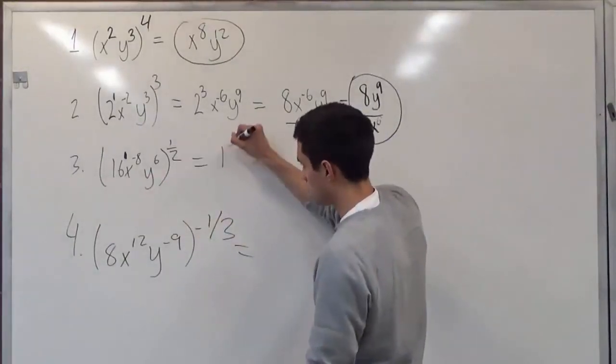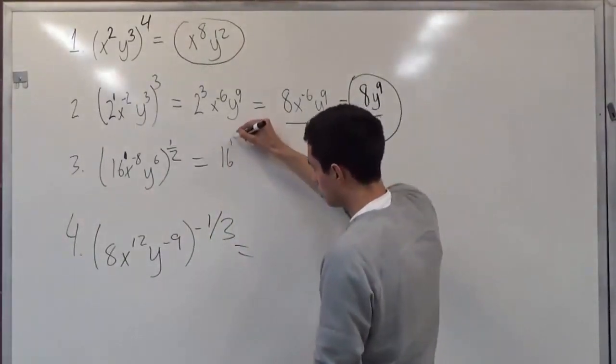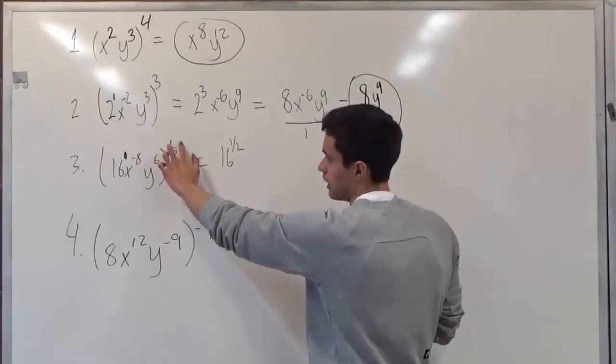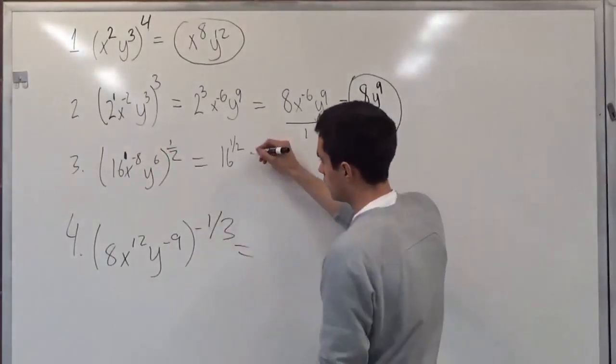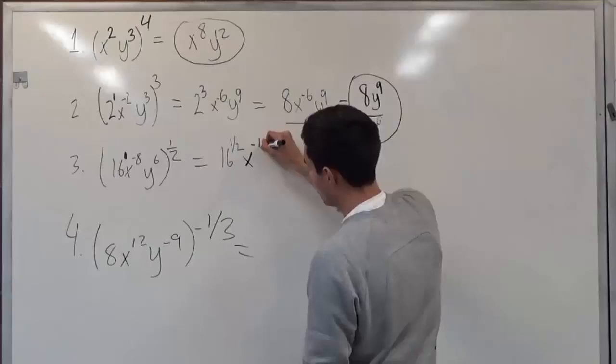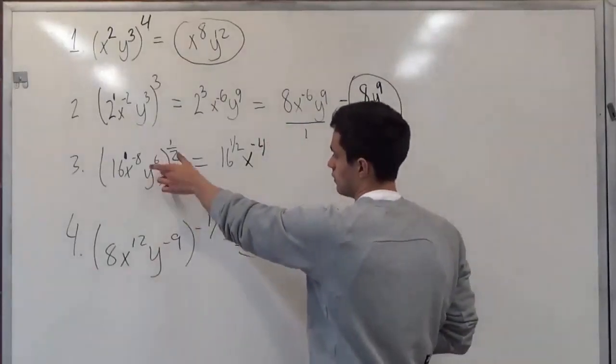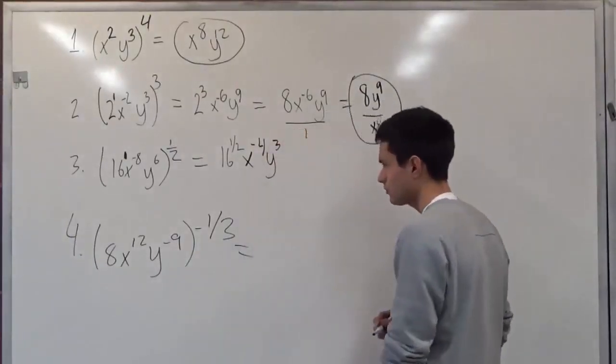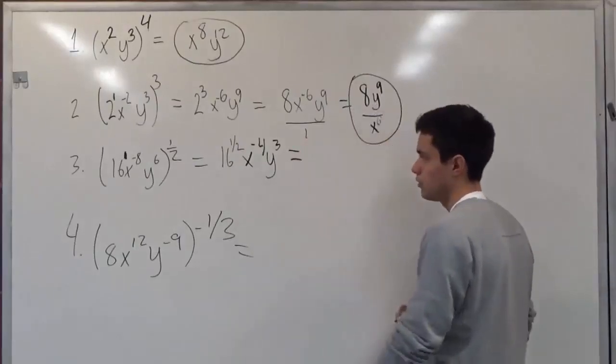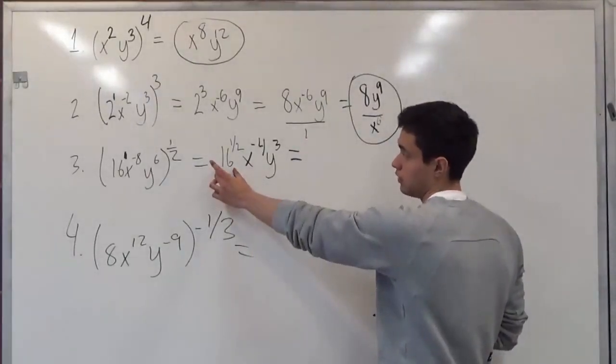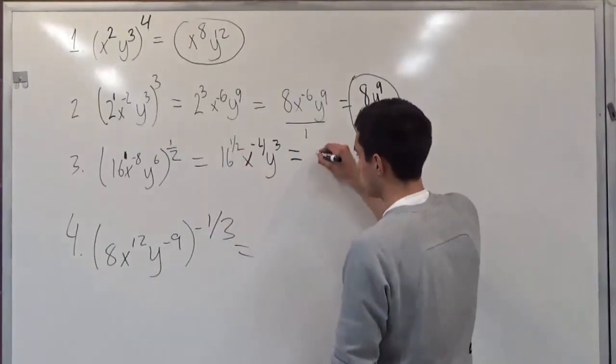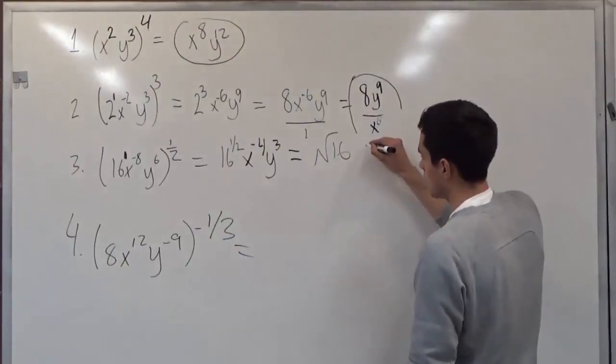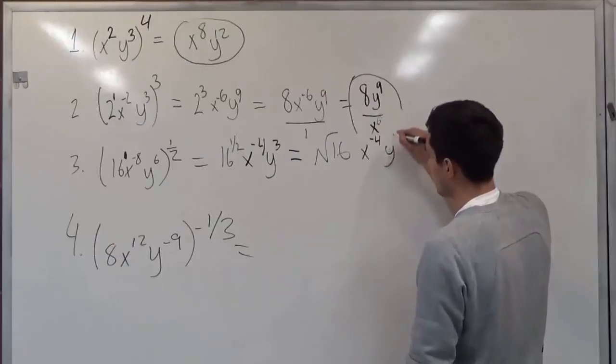So 16 to the 1 half, and then we have negative 8 times 1 half, which would give us x to the negative 4. And then 6 times 1 half, which would give us y to the third. So we know that this can be considered as a radical, because 16 to 1 half also translates to radical 16. So what this is saying is that radical 16 times x to the negative 4 times y to the third.